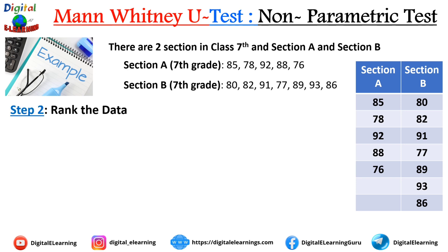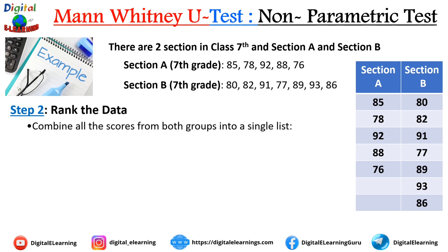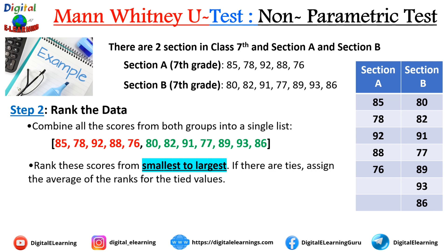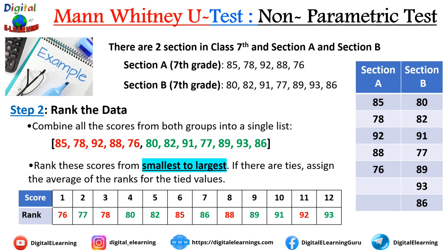Step 2: rank the data. We combine all scores from both groups into a single list, then rank them from smallest to largest. If two scores have the same value, we assign the average rank for tied values. In our case there are no ties, so we rank from 1 to 12, with the smallest being 76 and the largest being 93.